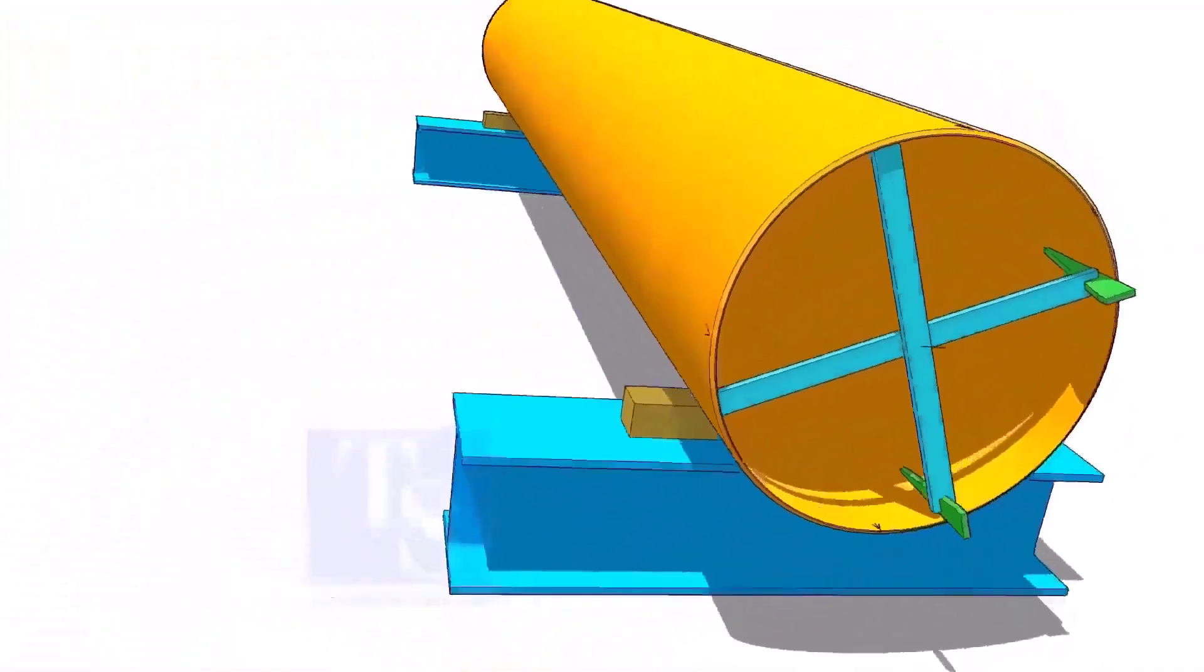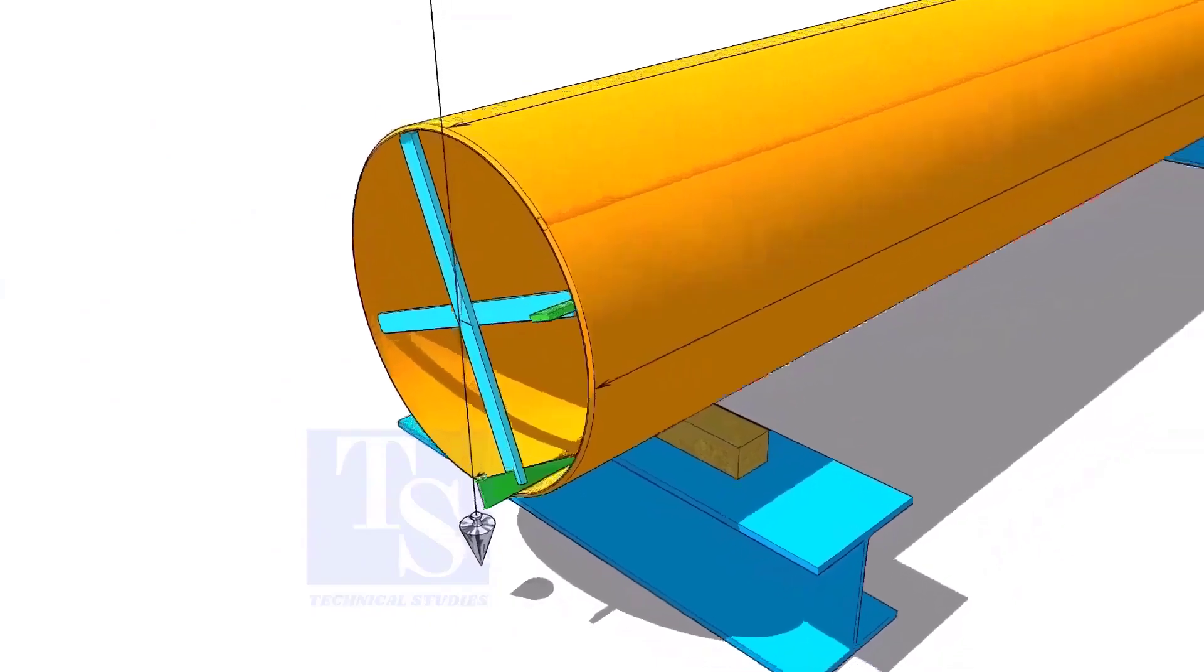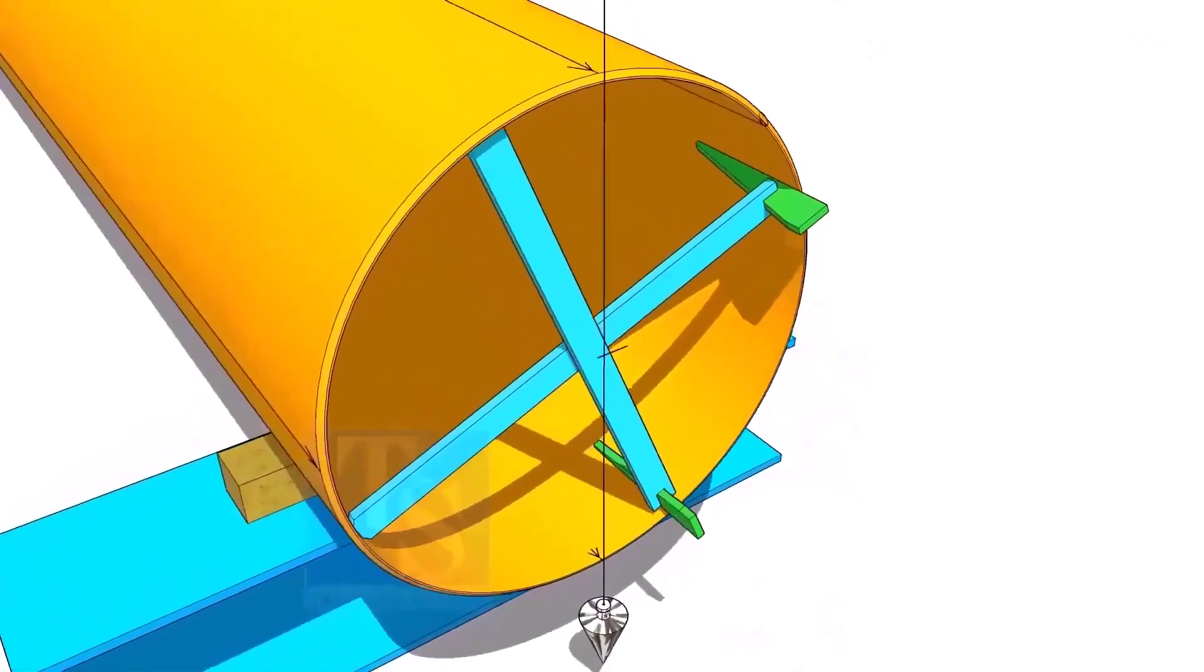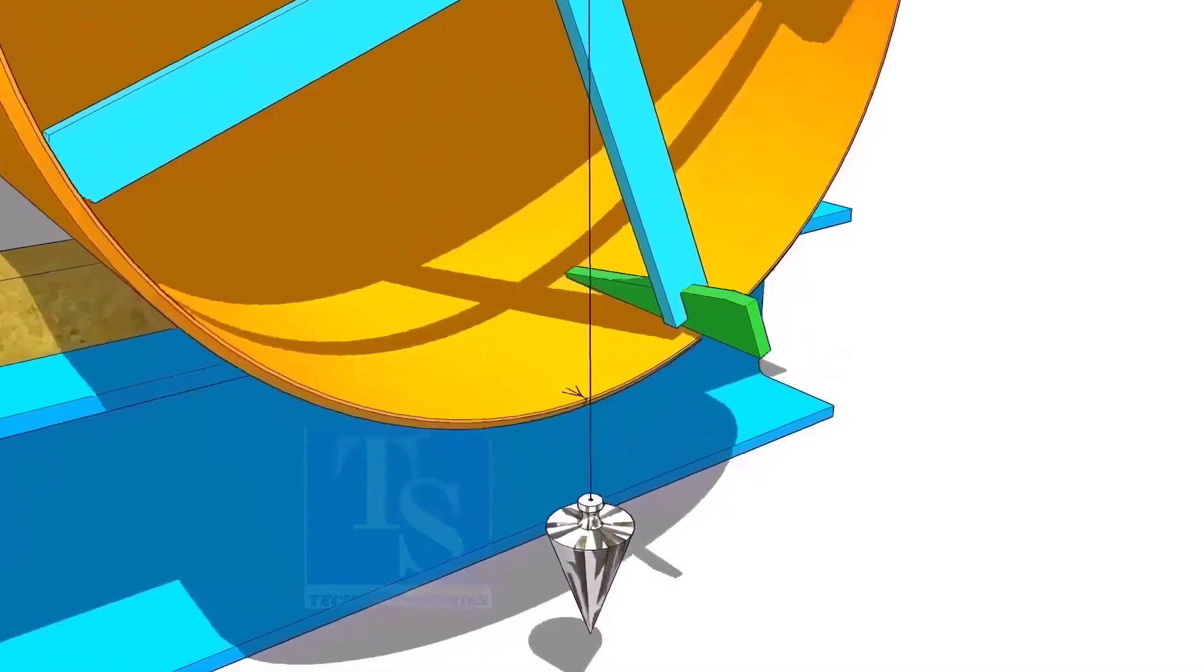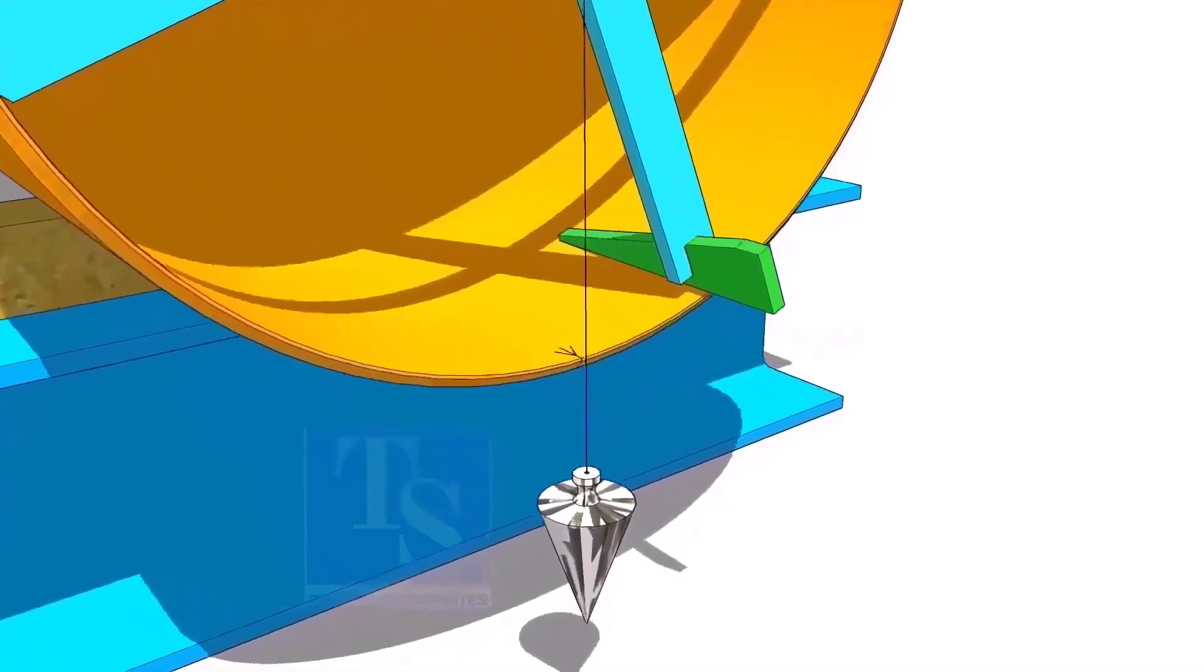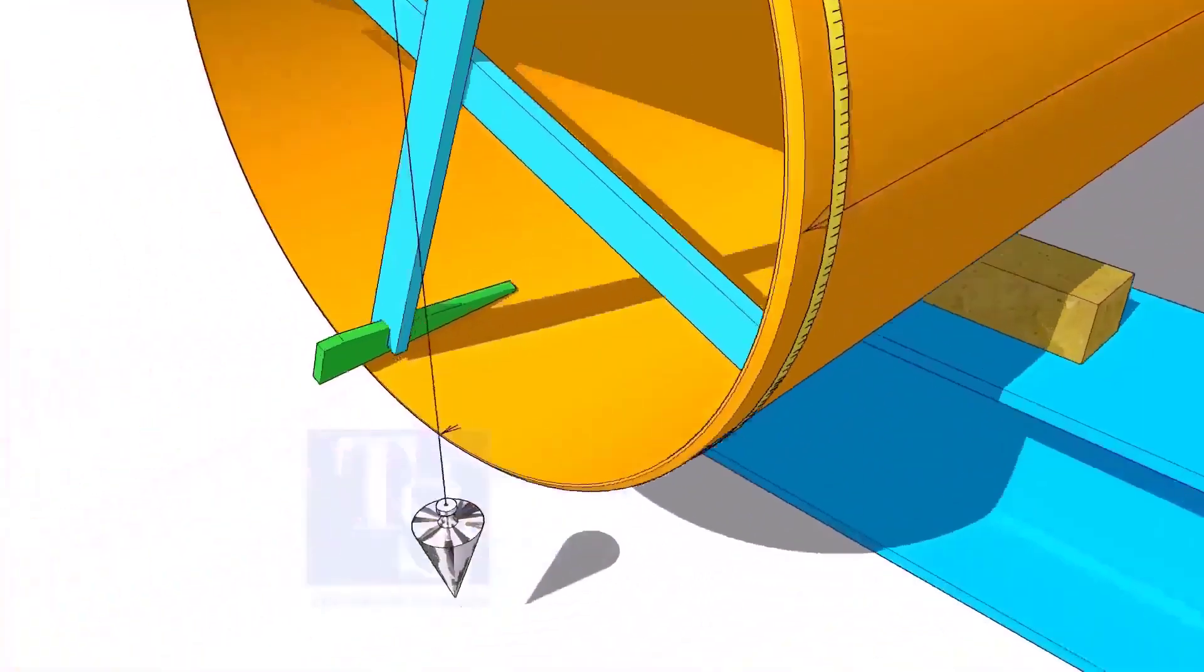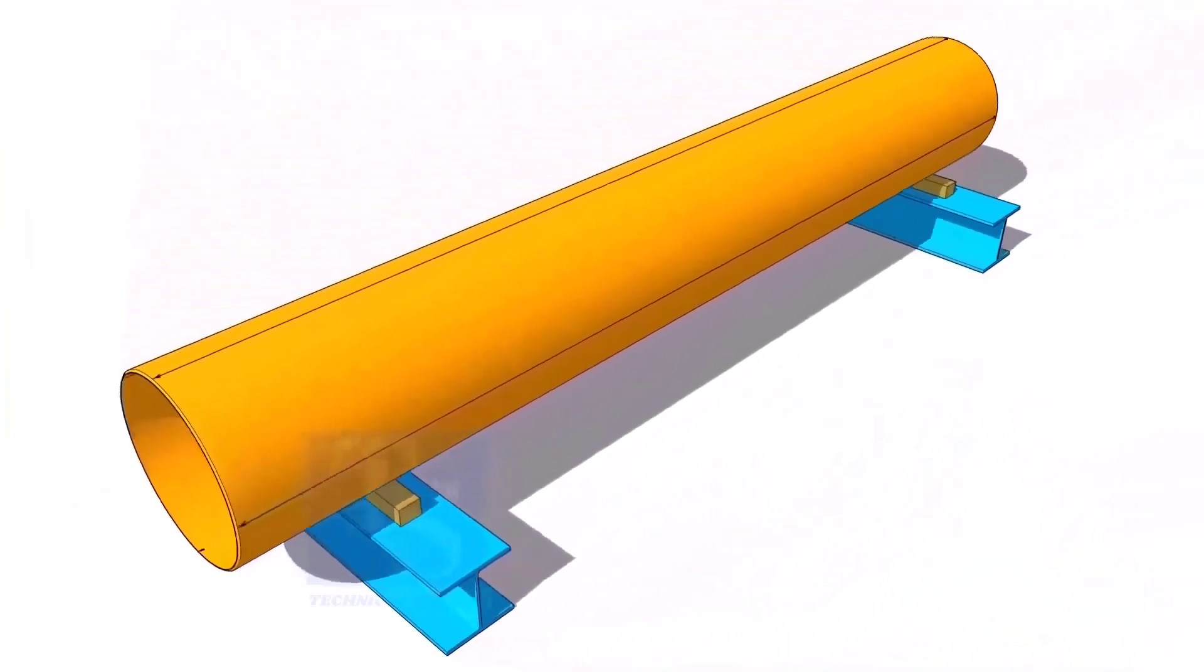Draw all the center lines. Put the plumb on the top side line. If the string passes through the line on the bottom, the lines are correct. Make sure they are correct.